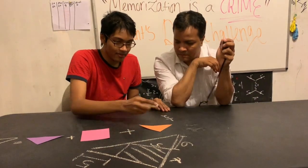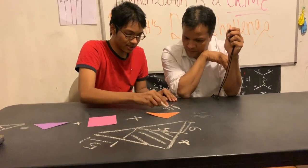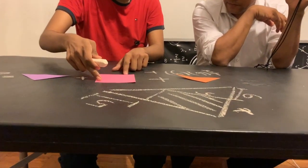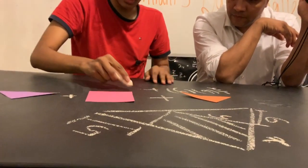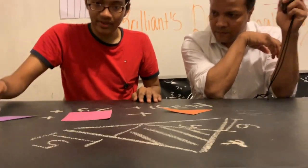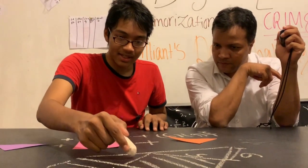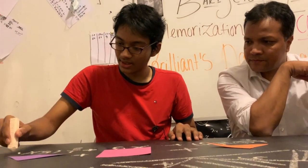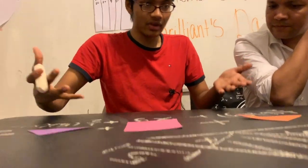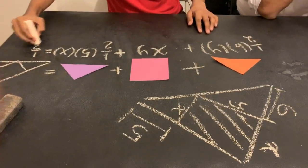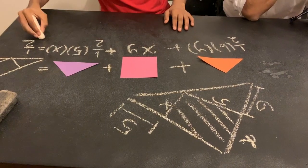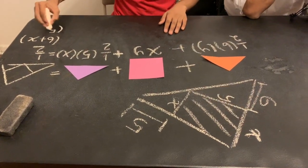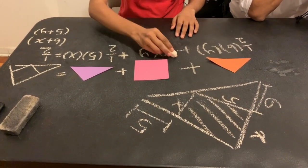The area of the orange one is going to be half base, which is six, times height, which is y. The area of the pink is going to be x times y, which is xy. The area of the purple triangle is going to be half of five times x. The area of the whole triangle is going to be half times (six plus x) times (five plus y).